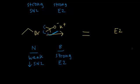So if you see a primary alkyl halide, think SN2 versus E2. SN2 is inherently favored unless you have a weak nucleophile and a strong base, in which case the strong base takes over and it reacts via an E2 mechanism. Now let's look at tertiary alkyl halides.